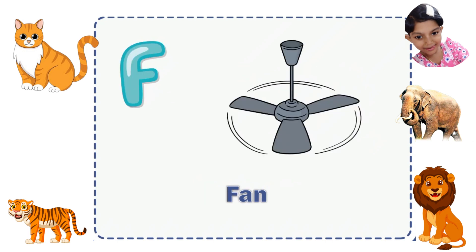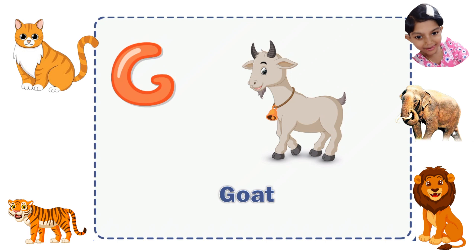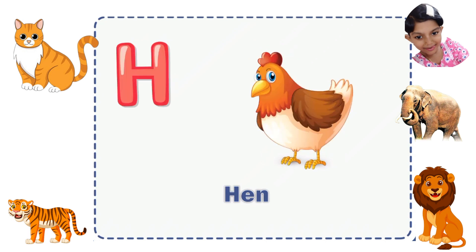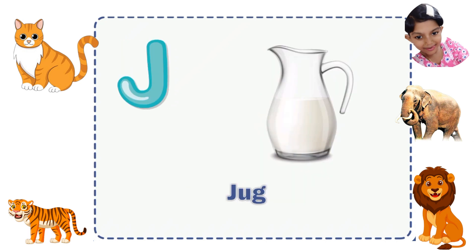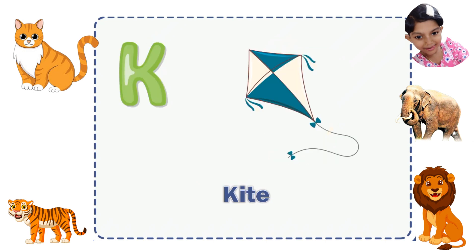F for Fan, G for Goat, H for Hen, I for Ice Cream, J for Jug, K for Kite.